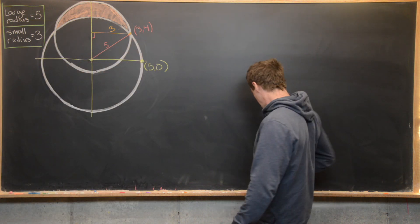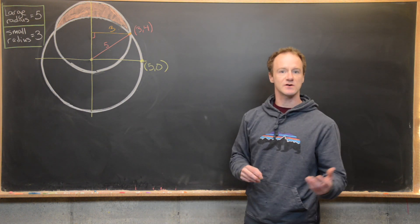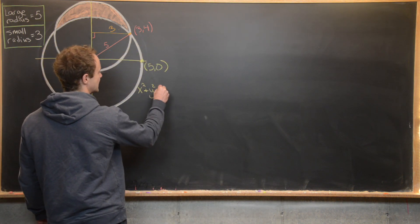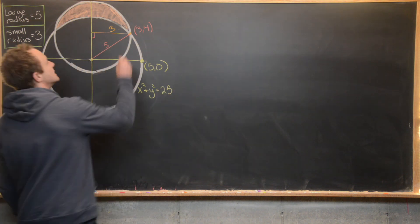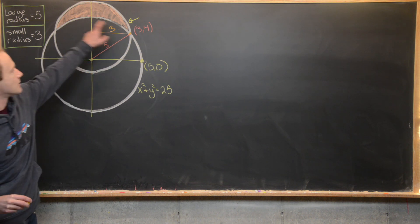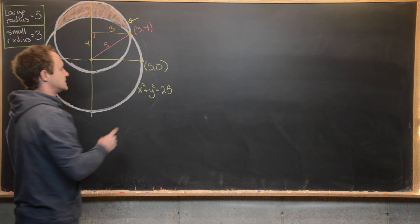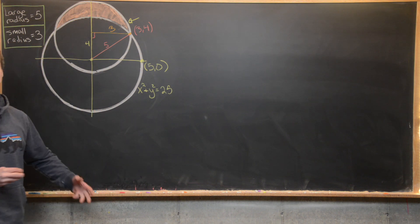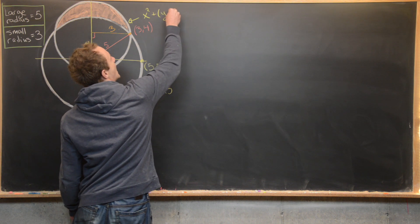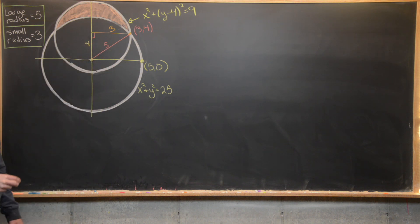From this point we can write equations for these circles. The larger one has its center at the origin, so its equation is x² + y² = 25. The smaller circle is centered at (0, 4), so we take the equation of a circle with radius three and shift it up, giving us x² + (y − 4)² = 9. That's the equation of our outer circle.